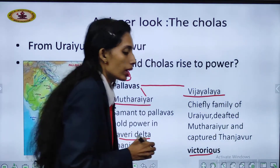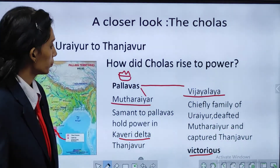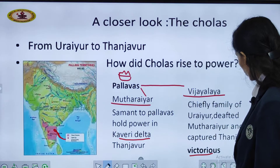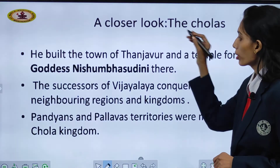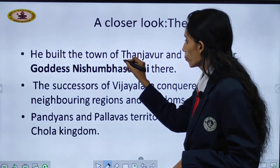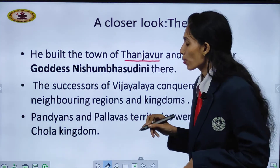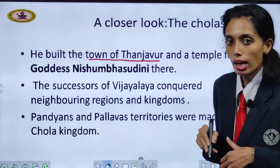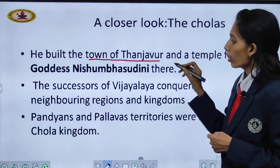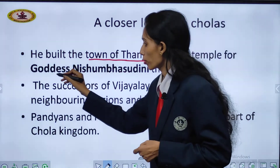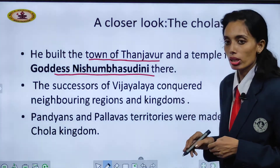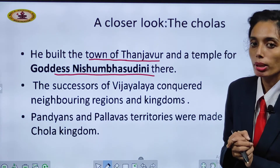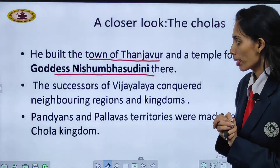Thus Vijayalaya became the new king. He built the town of Thanjavur, and once he conquered, he started building a temple for Goddess Nishambhashundini. Once he got the territory, he built this temple as a tribute.